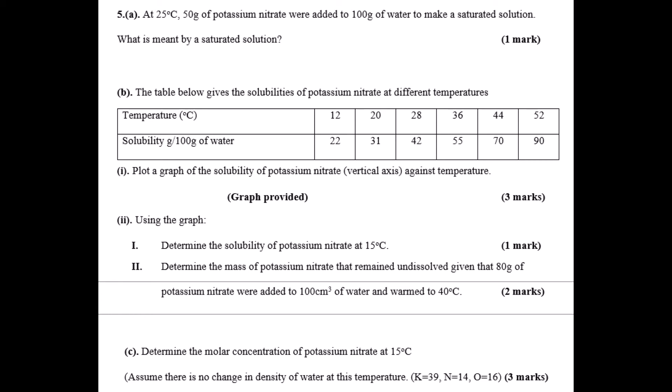Determine the solubility of potassium nitrate at 15 degrees Celsius. Determine the mass of potassium nitrate that remains undissolved given that 80g of potassium nitrate were added to 100g of water and warmed to 40 degrees Celsius. Then determine the molar concentration of potassium nitrate at 15 degrees, assuming the density of water did not change.